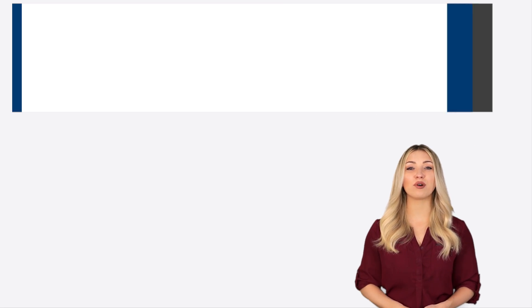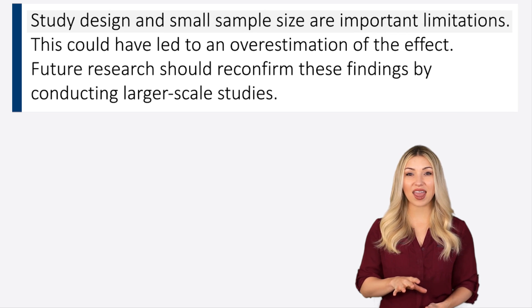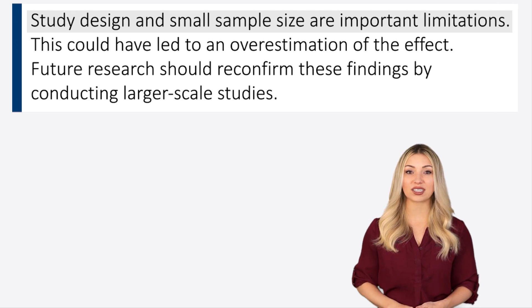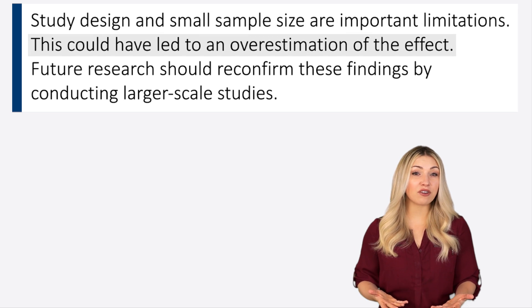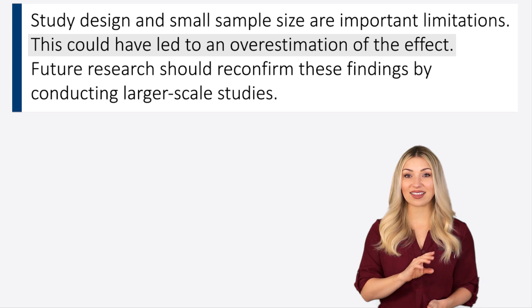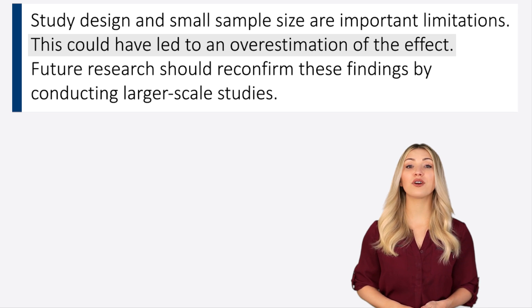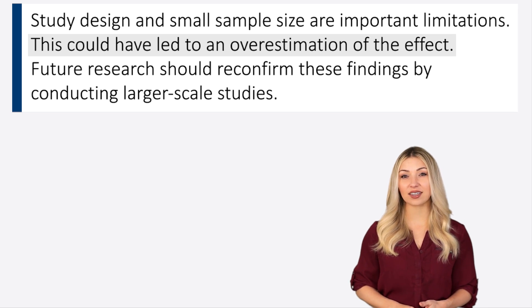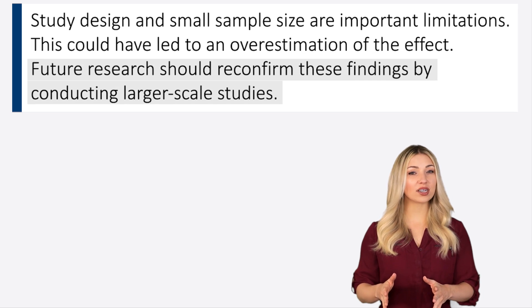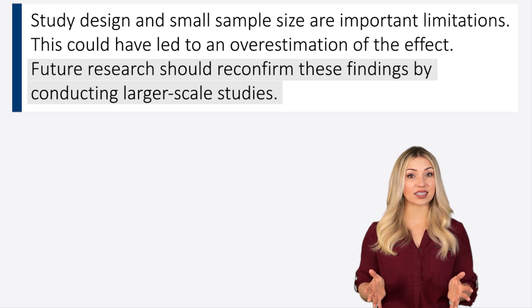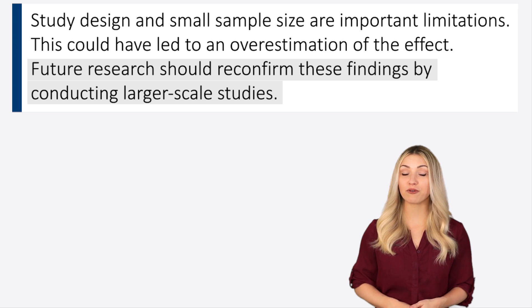Look at this example. The authors are saying that the main limitations of the study are the small sample size and weak study design. Then they explain how this might have affected their results. They are saying that it is possible that they are overestimating the actual effect they are measuring. Then finally they are telling the readers that more studies with larger sample sizes should be conducted to reconfirm their findings.